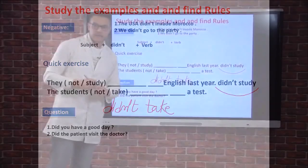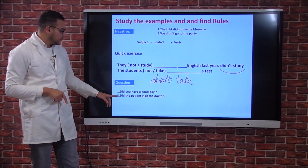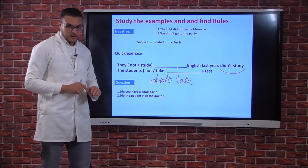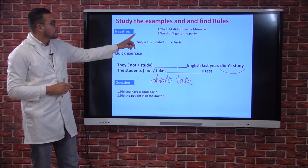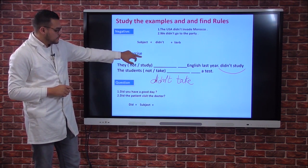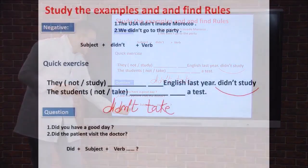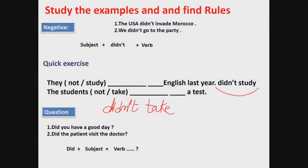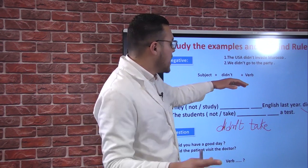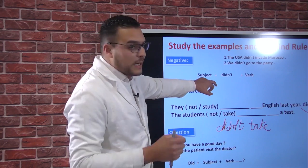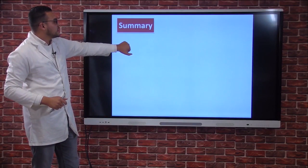Did you have a good day? Did the patient visit the doctor? To make a question in the simple past, the structure is: did + subject pronoun + verb in the infinitive. Subject pronouns include I, you, he, she, it, etc. So: did + all subject pronouns + verb in the infinitive form.